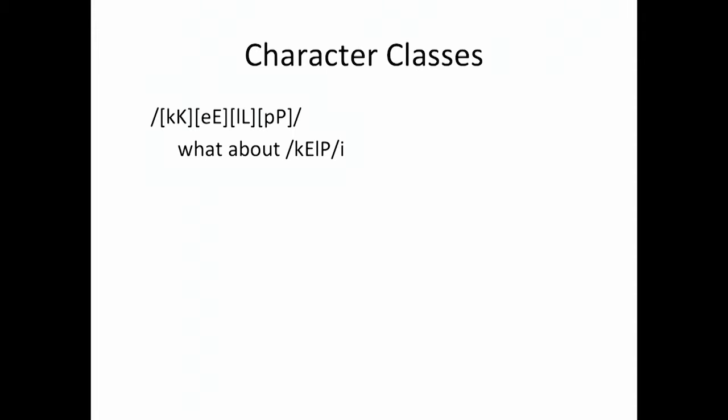What about this one? We've got a small K, a capital E, a small L, a capital P, followed by this little modifier I. That's a more compact way to write it — we have 'kelp' with the I modifier. These are both looking for the same thing. This is a little nicer because we don't care how the word kelp is written, we just care that the word kelp is in there somewhere.